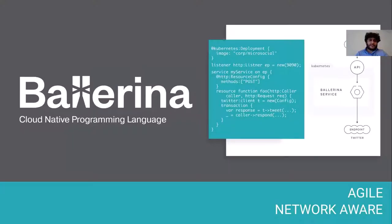Ballerina is a language that is agile and network aware. The Ballerina language knows about network endpoints, how the network works, and how to do resilient communication. The idea is to create an additional abstraction layer of understanding the network to make the life of the developer much easier in doing cloud native development.